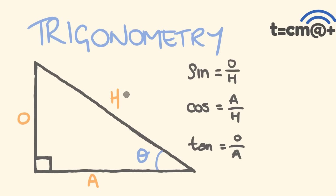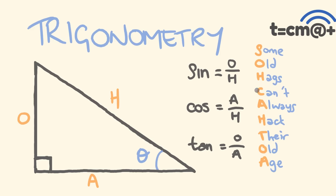There's a really easy way to remember these. Here's the mnemonic: 'Some old hags can't always hack their old age.' SOH — sine equals opposite over hypotenuse. CAH — cos equals adjacent over hypotenuse. TOA — tan equals opposite over adjacent. So when solving a trigonometric equation, the very first thing to do is label the unknown sides, and the next thing is to determine which trigonometric function to use.